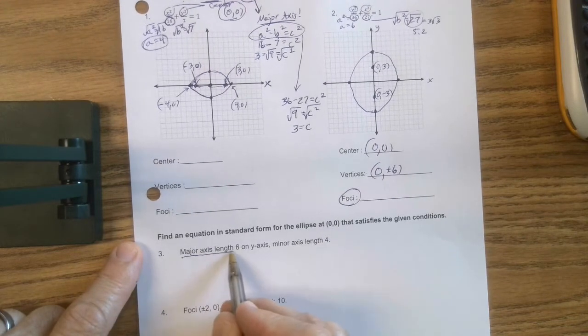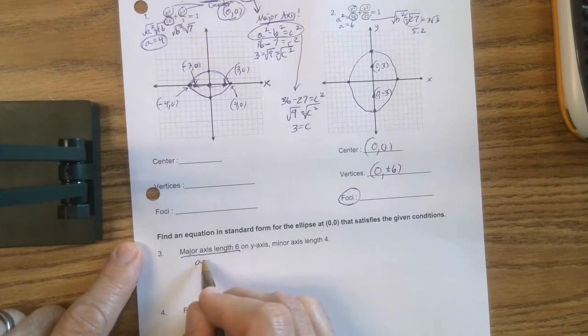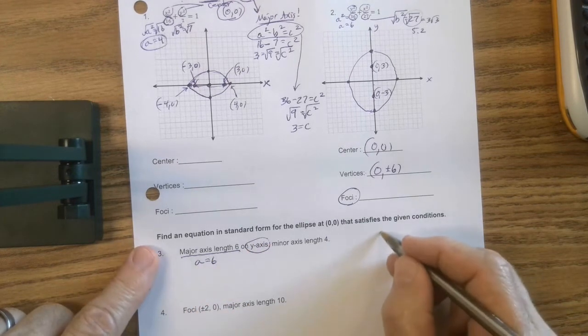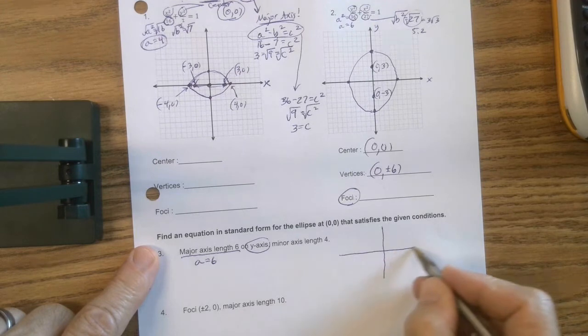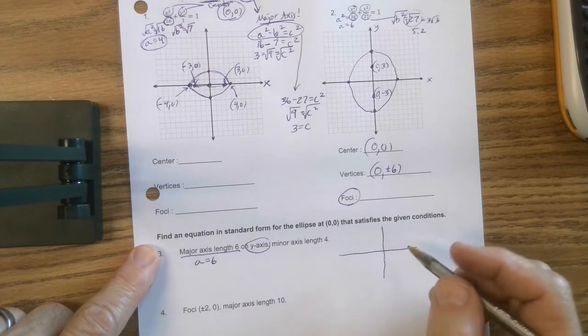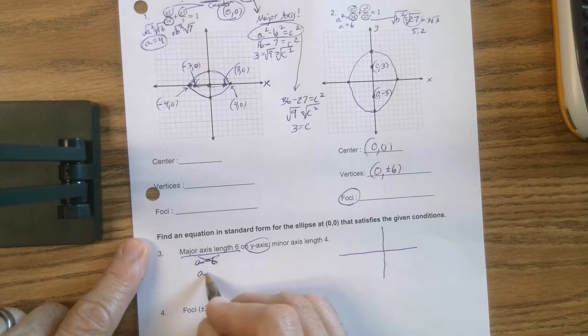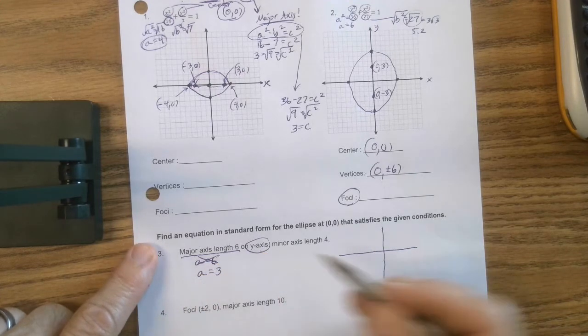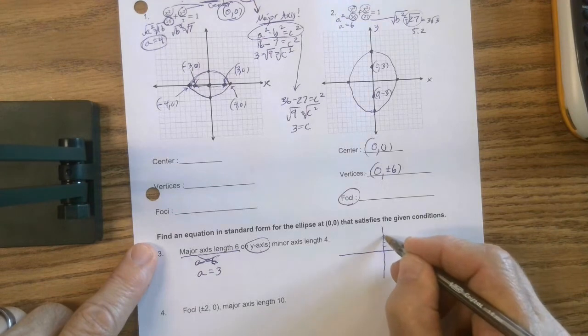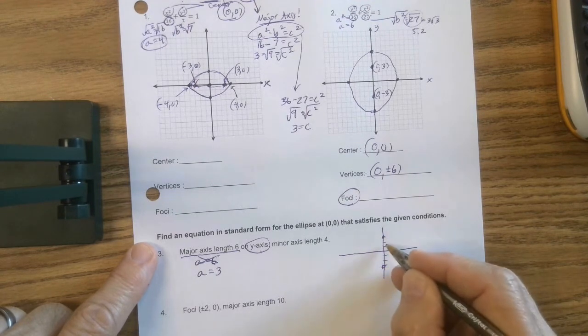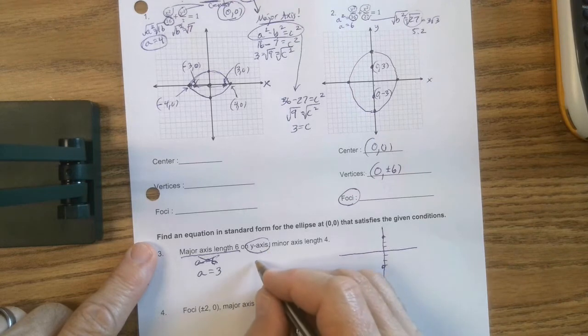Well it says the major axis length 6. You know what that's saying? A is 6. And it's on the y-axis. So already I'm getting some big clues. Whoops, I made a mistake there. I didn't mean a is 6. a is 3. Which means I go up the y-axis 3. 1, 2, 3. Down 1, 2, 3. And I can stop right there and say, you know what? This is going to be y squared over 9. Because remember, it's y squared over a squared.